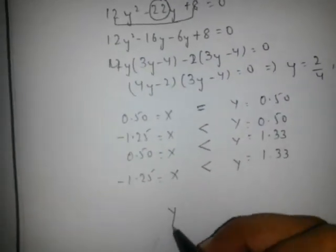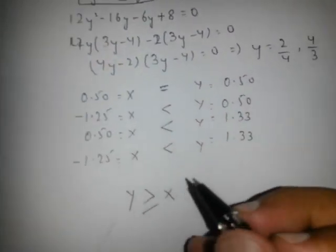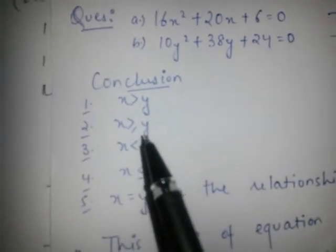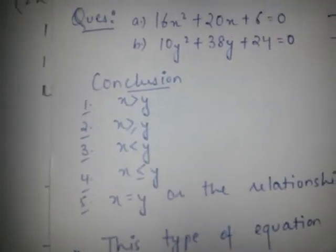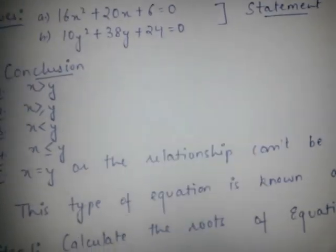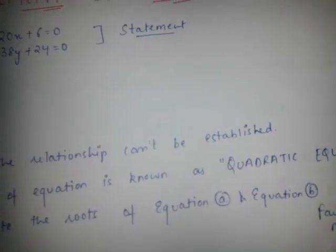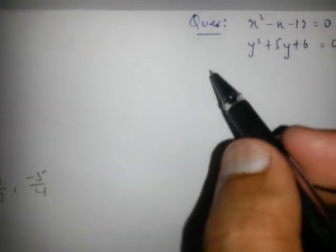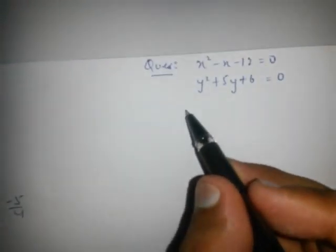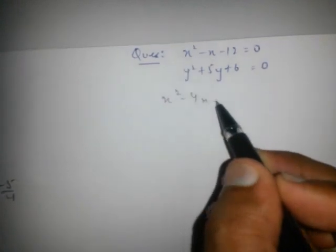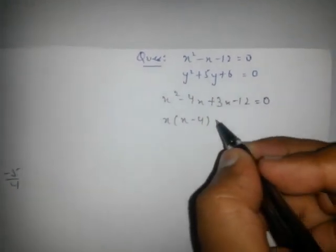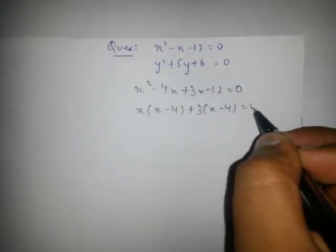Then the conclusion should be Y greater than or equal to X. This is our answer. As I showed you, there are five conclusions: X greater than Y, X greater than or equal to Y, X lesser than Y, X lesser than or equal to Y, and the last one is X equals Y. This is the factorization method. We get X = minus 3 and for equation B we break the middle term and get the values.